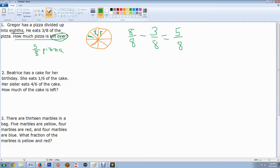All right, let's look at Beatrice here. Beatrice has a cake for her birthday. She eats one-sixth of the cake. Her sister eats four-sixths of the cake. Her sister's kind of a pig, I guess. So how much of the cake is left? So we know when it's left, that's again a subtraction word.